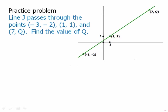Here's a problem. Pause the video, and then we'll talk about this. Line j passes through the points (-3, -2), (1, 1), and (7, q). Find the value of q.